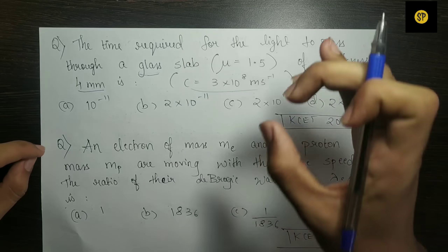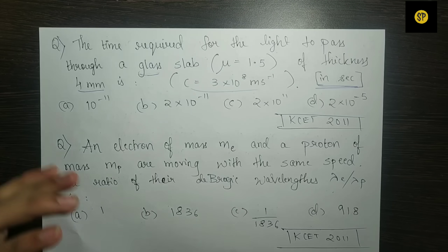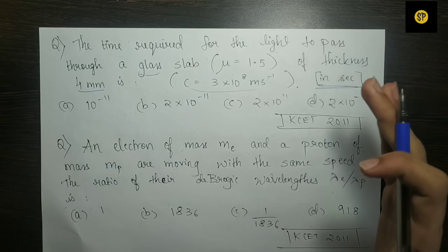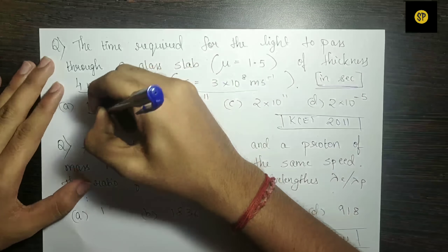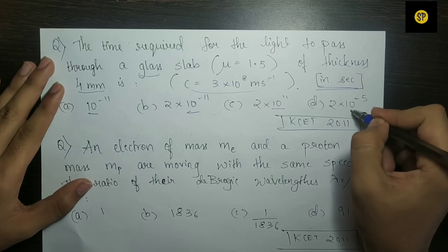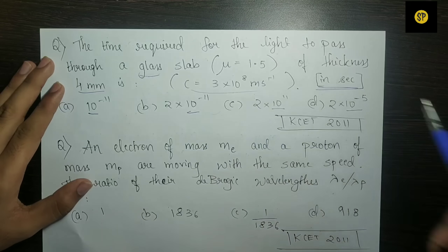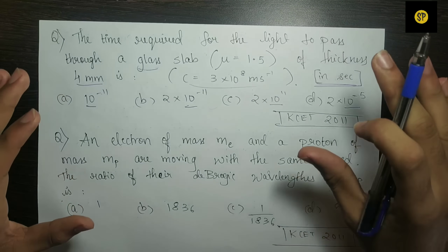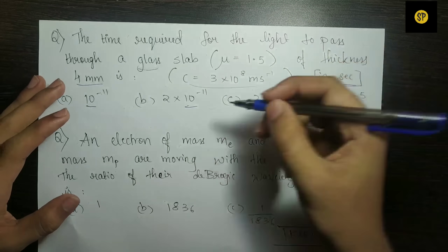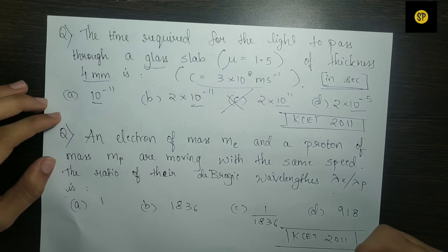Without reading the question carefully, how do we mark the correct answer? If you look at the options, they involve 10 to the power minus 11, 10 to the power minus 11, and 10 to the power minus 5. Since time must be negative in power, we can eliminate any option that is 10 to the power minus 5.